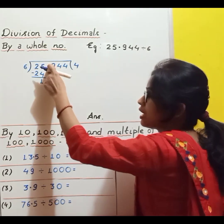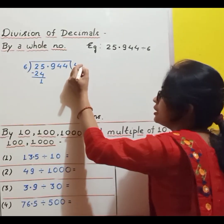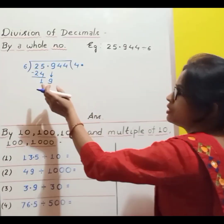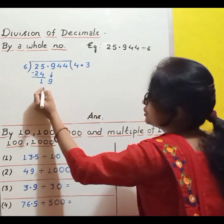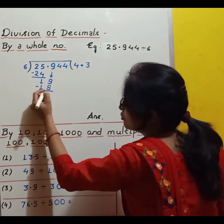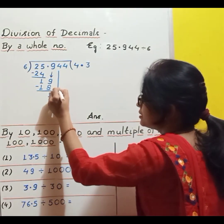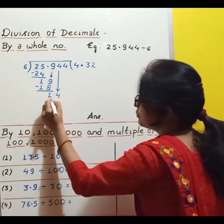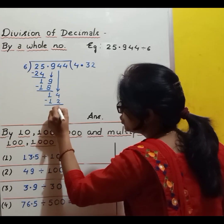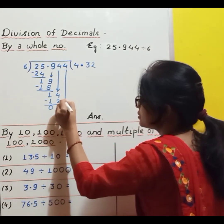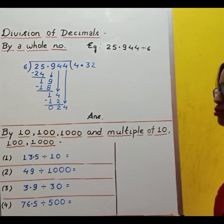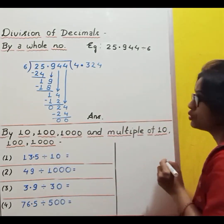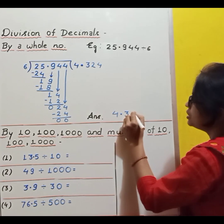Now we copy down the digit. Read the table to bring down 19 — 6 threes are 18. 1 is remaining. Copy the next digit, which is 4, making 14. Read the table: 6 twos are 12. 2 is remaining. Copy the last digit, which is 4, making 24. 6 fours are 24. 0 is remaining. So the quotient is 4.324.